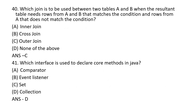Which join is to be used between two tables A and B when the resultant table needs rows from A and B that match the condition, and also rows from A that do not match the condition?